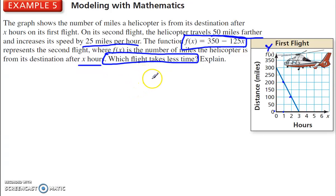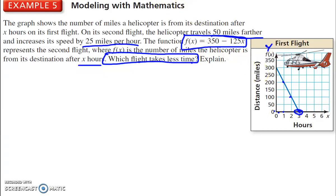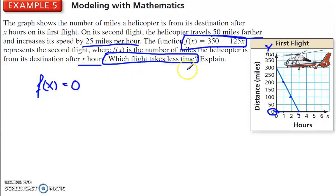We've increased our speed by 25 miles per hour — which flight takes less time? There are a couple of ways we could approach this. We could make a table and graph the second one, or we could say: how long does it take until we arrive? When does this cross the x-axis on the second flight? Crossing the x-axis is the point where the helicopter arrived. Here it took about 3 hours on the first flight. When it crosses the x-axis, y or f of x equals 0. So I want to know: when is f of x equal to 0? That's when we're 0 miles from the destination — we've arrived.